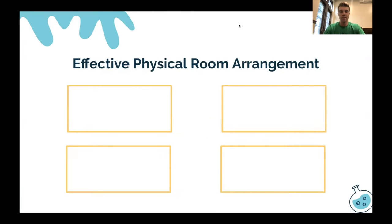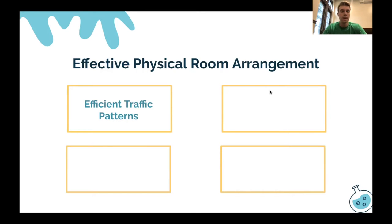When I think about effective physical room arrangement, I think about four things. The first is efficient traffic patterns — arranging the physical elements of the classroom to ensure that students and teachers can move freely throughout. This means providing ample walkways and eliminating physical barriers. Both of those will help to increase classroom safety.